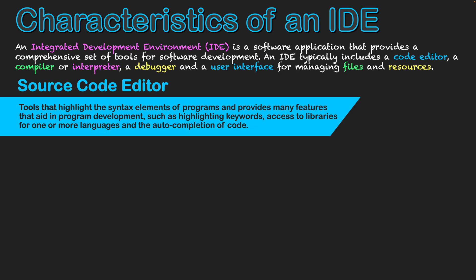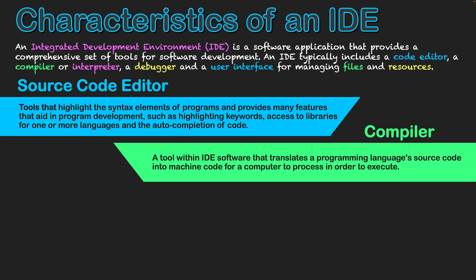The next area is that of a compiler. This is a tool within the IDE that translates a programming language's source code into machine code — binary 0s and 1s — which is what computers understand and can process in order to execute a program. That translation is what a compiler performs in order to run a program.